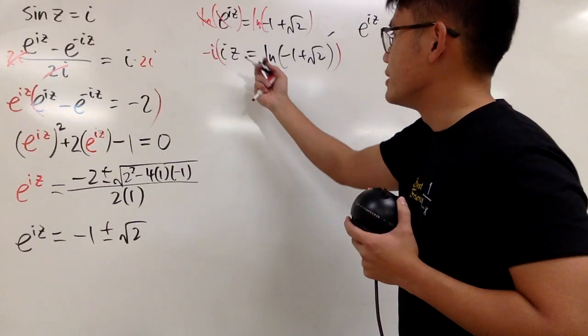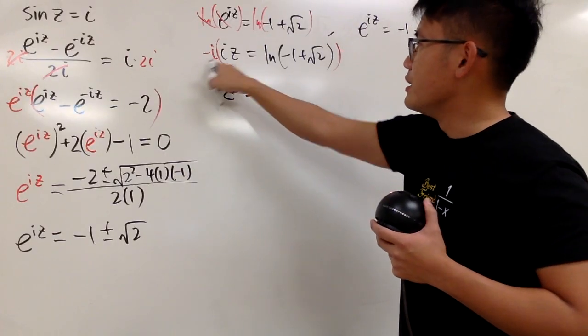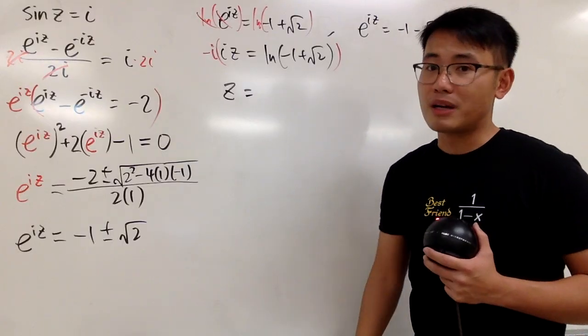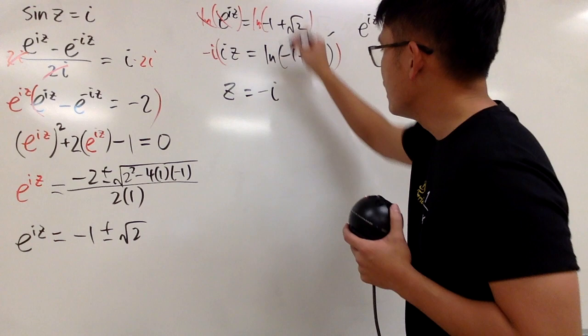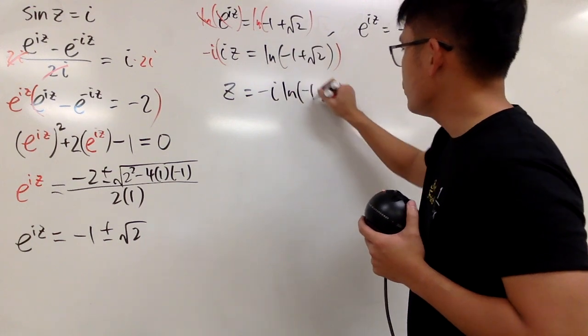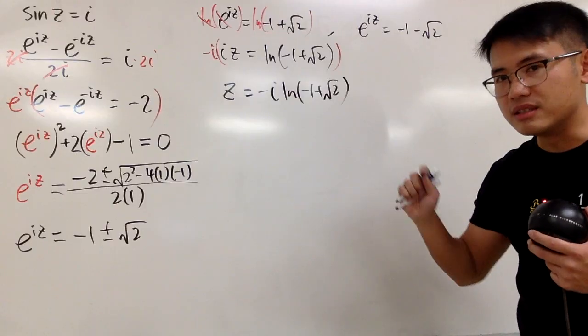Therefore, I still get my positive z by itself, like this. And then I just have to do this times that. I don't need i to be on the bottom if I don't want to, right? So we get negative i natural log of negative 1 plus square root of 2, like that, and we are done. And this is the first answer.